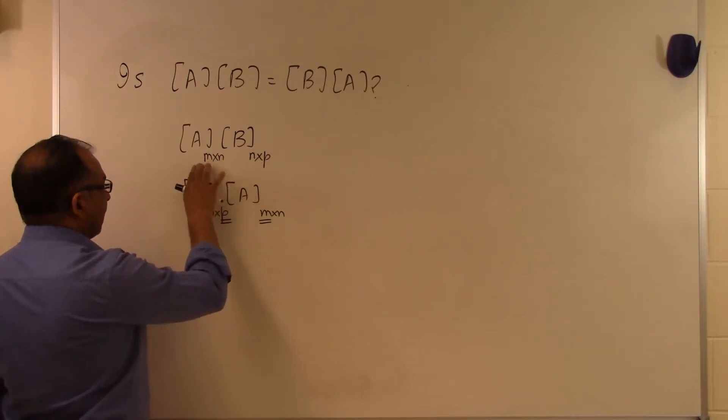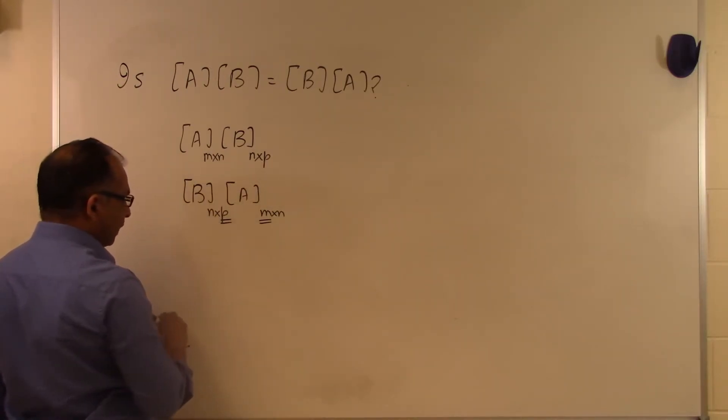So we can see that if A times B is allowed, B times A cannot be allowed unless this is same as this. If we consider this to be same, then both of these have to be squared matrices in order for that to be possible.